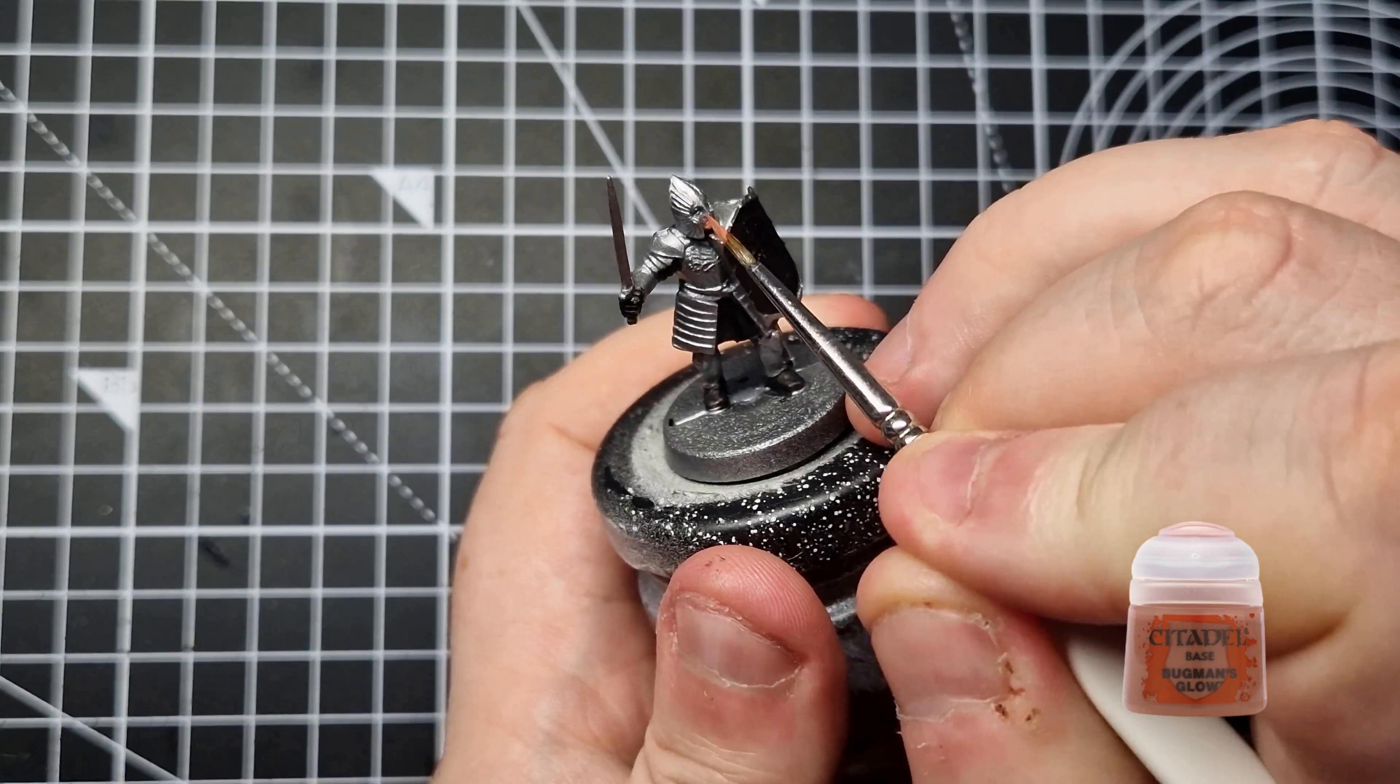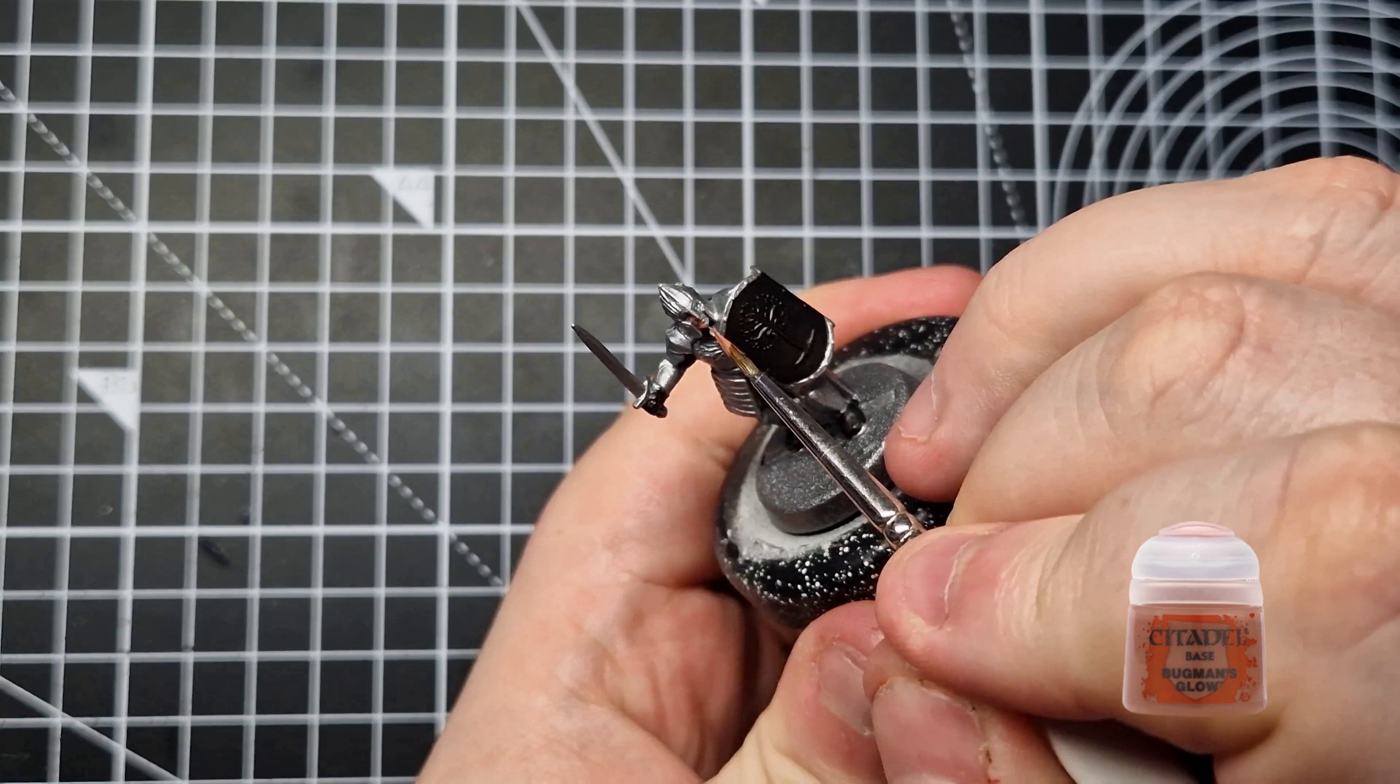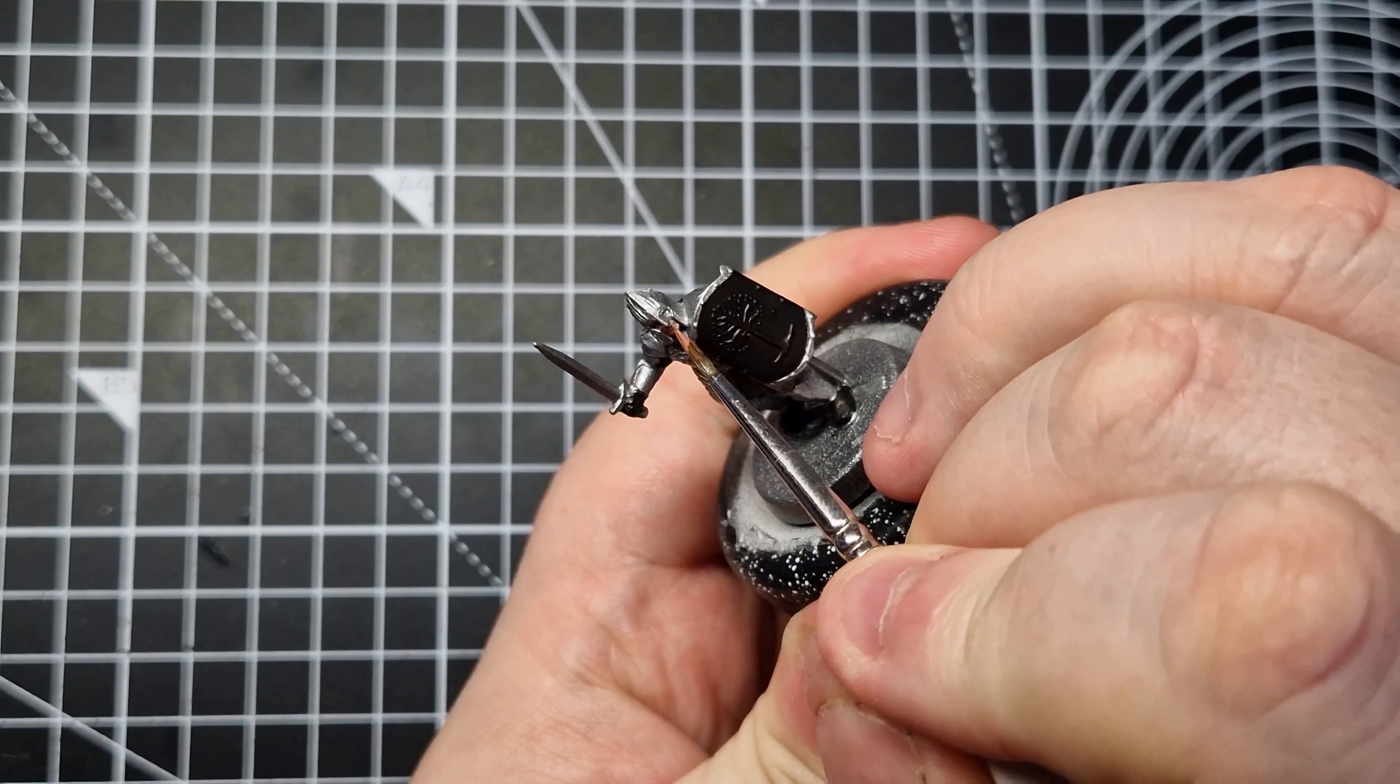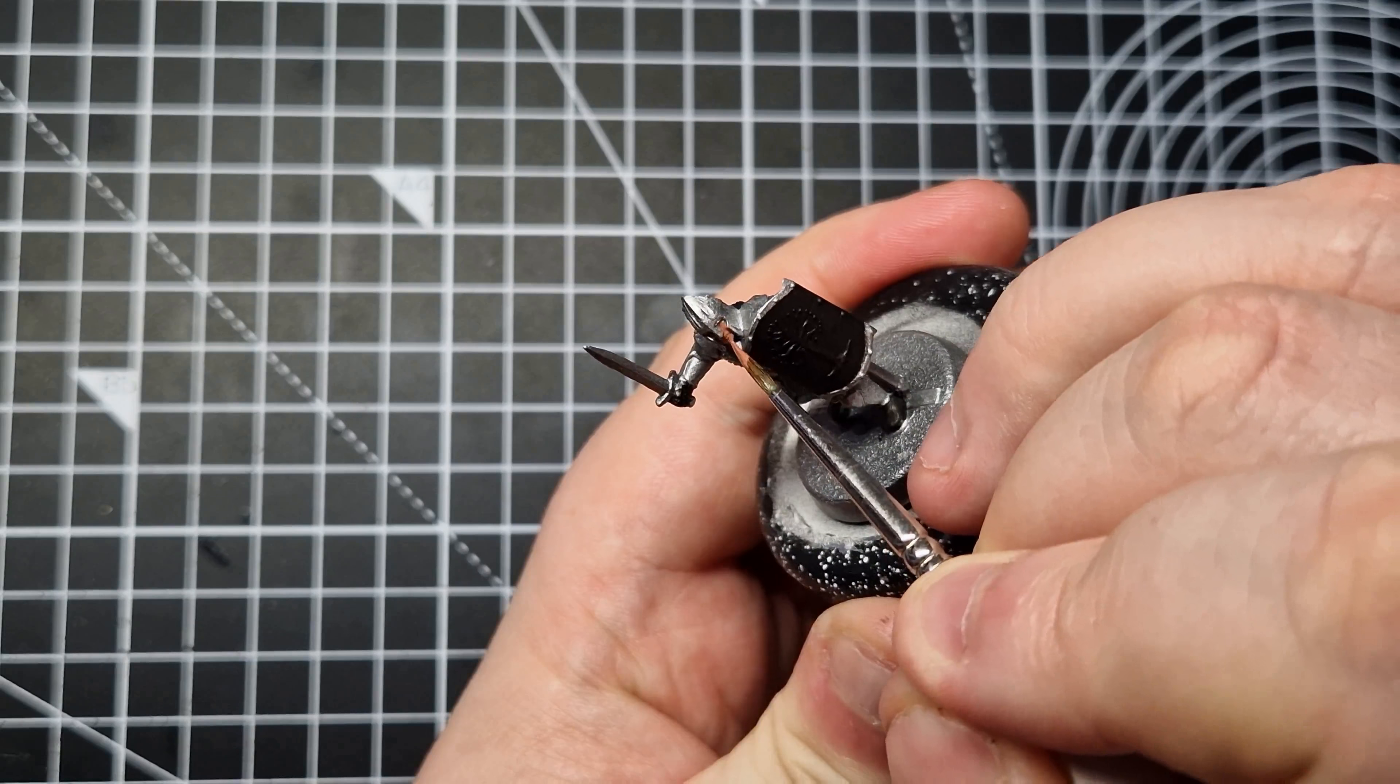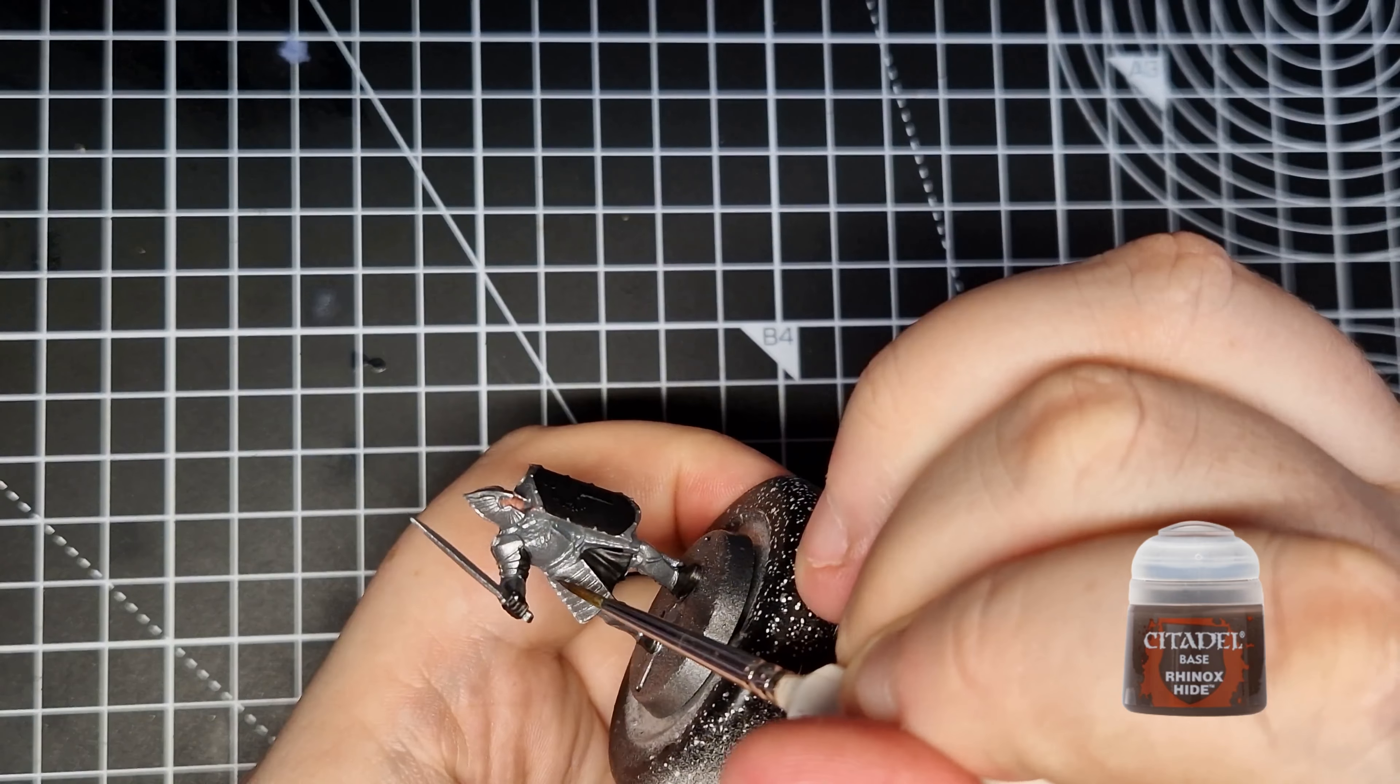For the flesh, I'm going to use Bugman's Glow, but of course you can use whatever colour you want, as long as you've got a highlight colour for it. There's not a lot of flesh showing on this model, which is just as well because I find it very difficult to paint flesh. So, a little bit of Bugman's Glow in amongst the face shield just to cover his face.